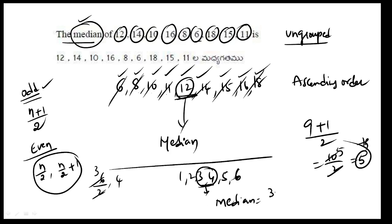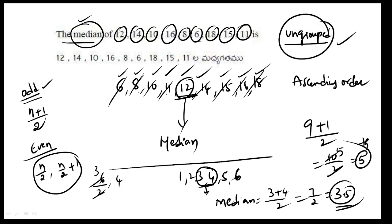11 and 12. Whenever I think — the median is very simple for ungrouped data. The number of terms: if odd, the formula is n plus 1 by 2, which gives the middle term.